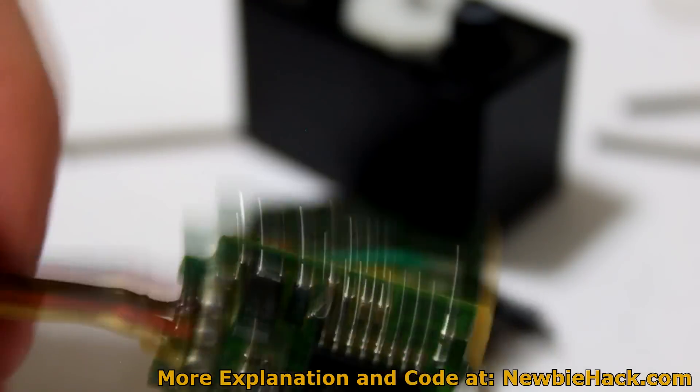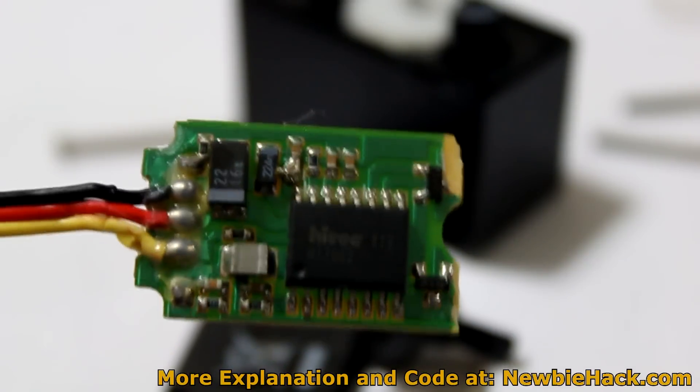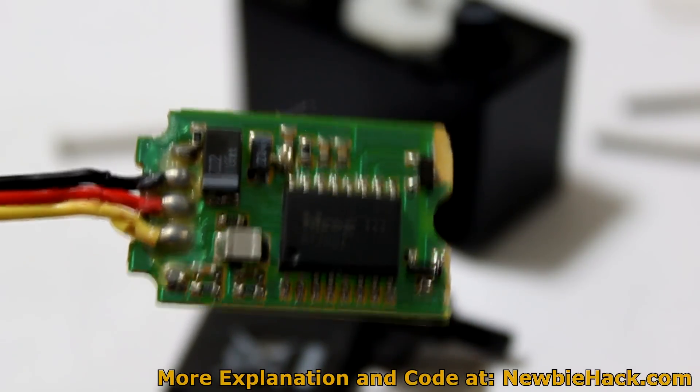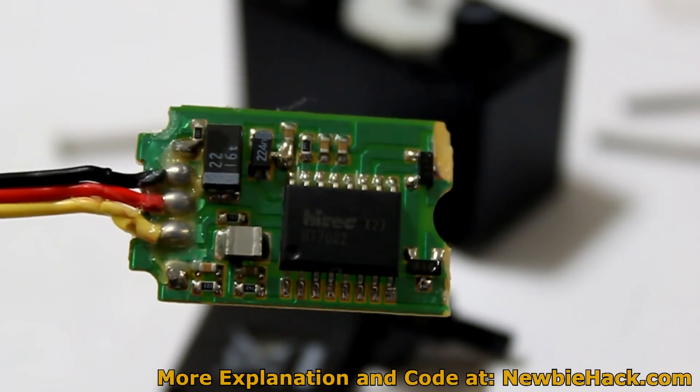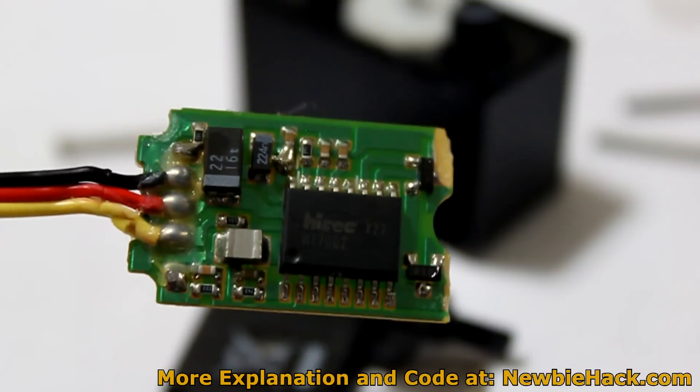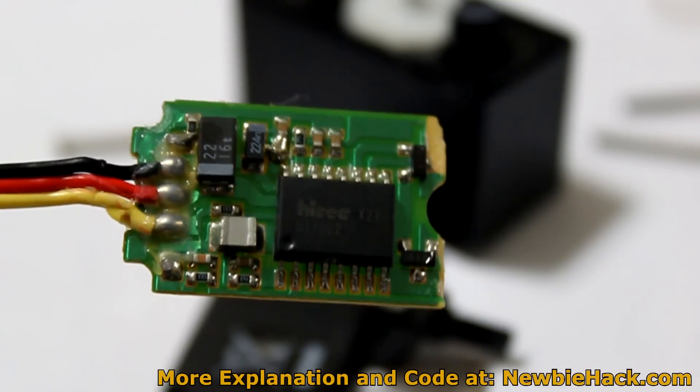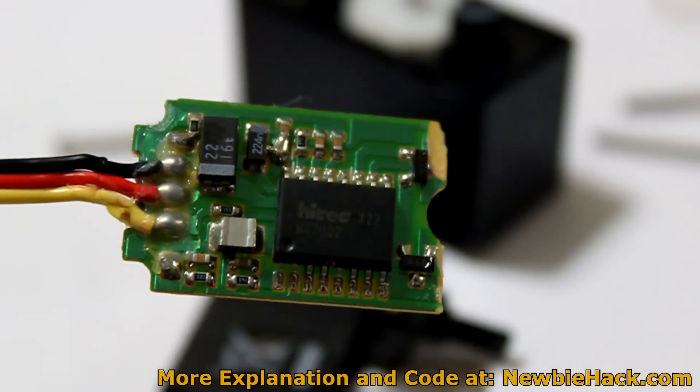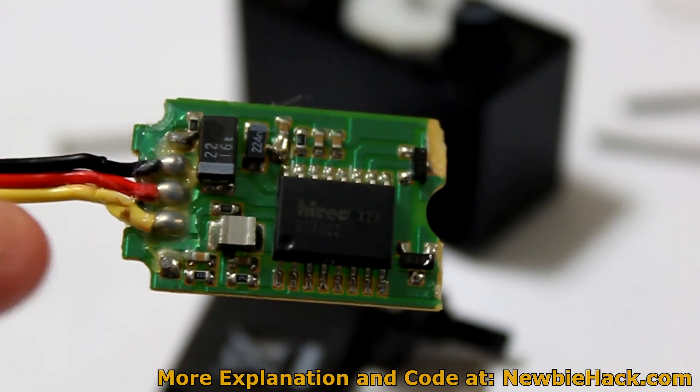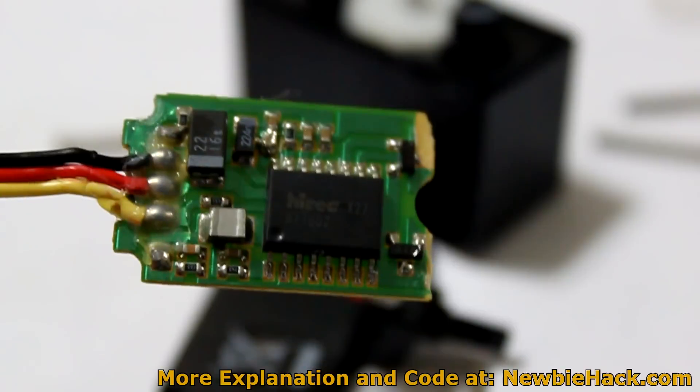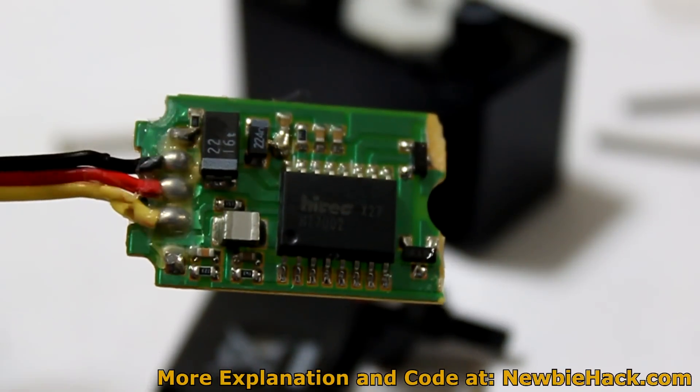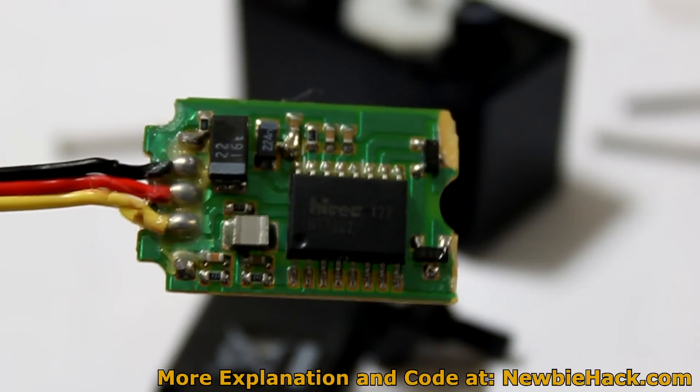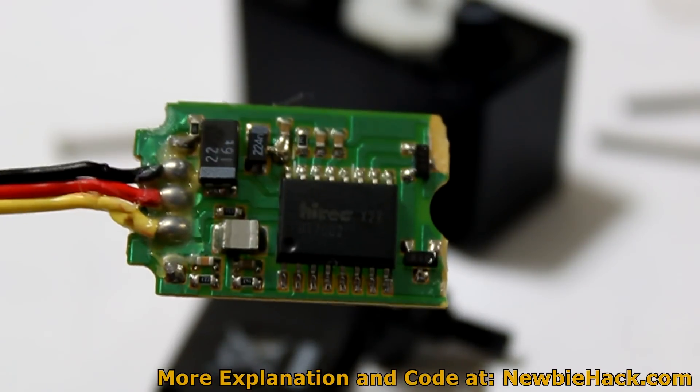And the three wires that are involved in this particular servo is the yellow, which is the signal, the red, which is the power, and the black, which is the ground. And the red would be a power between, I guess, three and six volts. And this would be just a continuous power to make sure that the motor has full power the whole time.